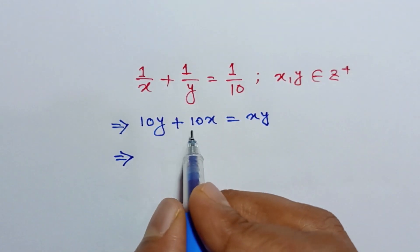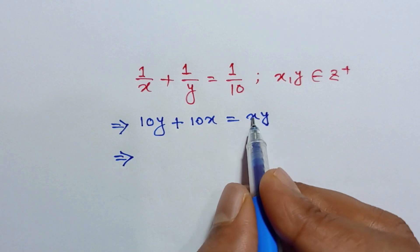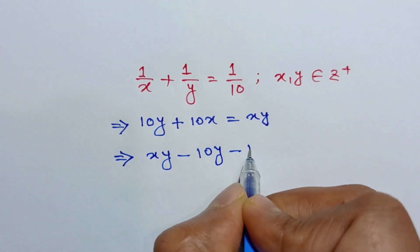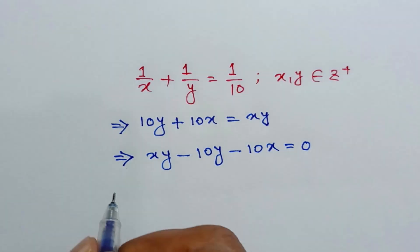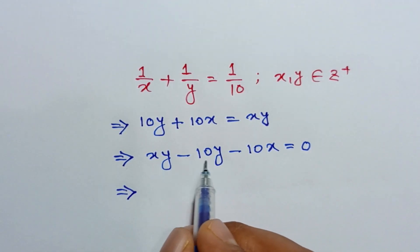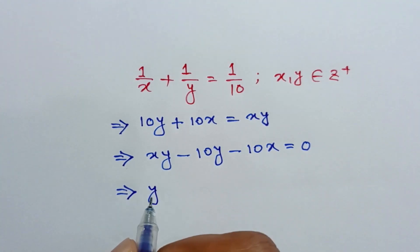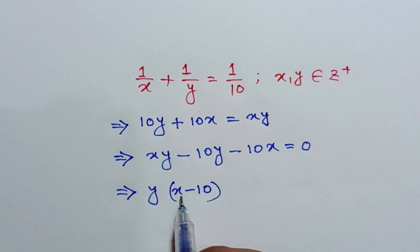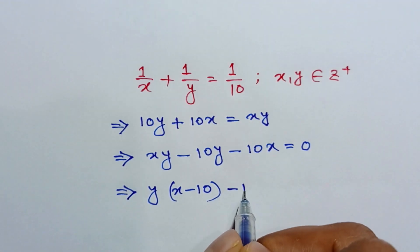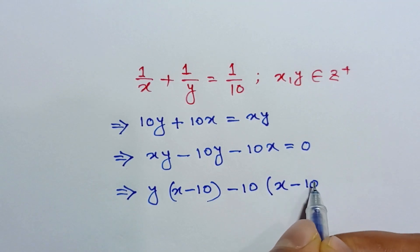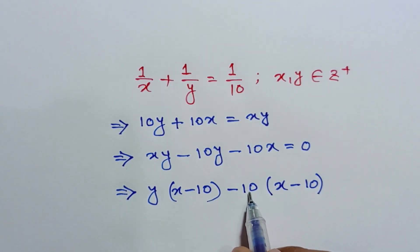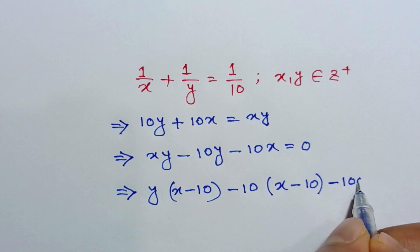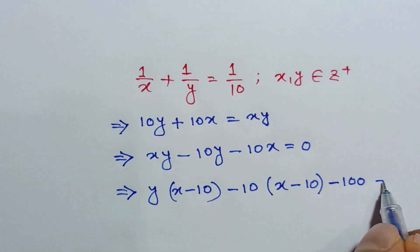Taking the left side to the right and the right side to the left, we have xy minus 10y minus 10x equals 0. Taking y common from the first two terms gives y times (x minus 10). To make a similar term (x minus 10) from the remaining part, we factor out negative 10, giving minus 10(x minus 10), but that introduces an extra 100, so we subtract 100 to balance.